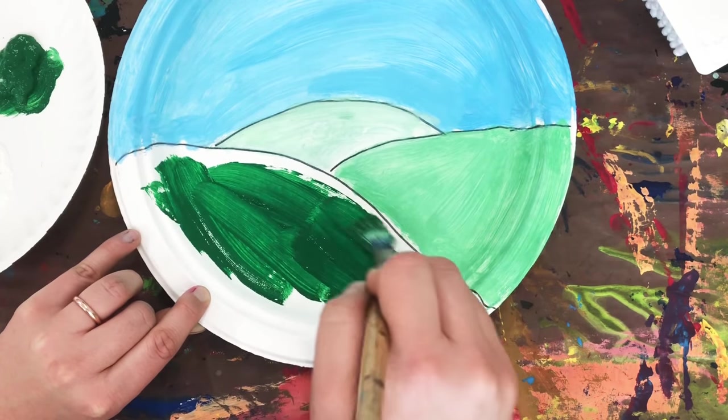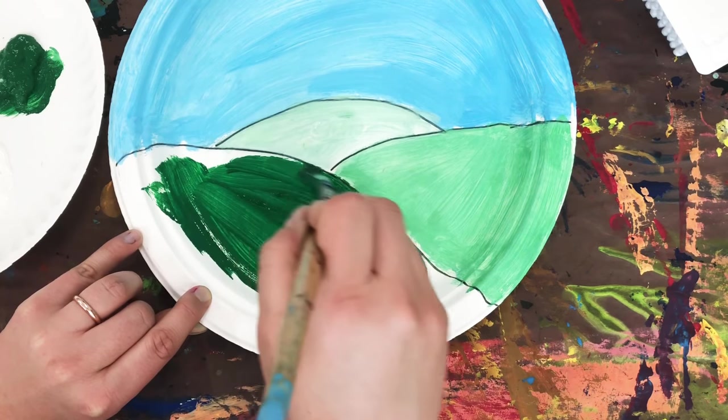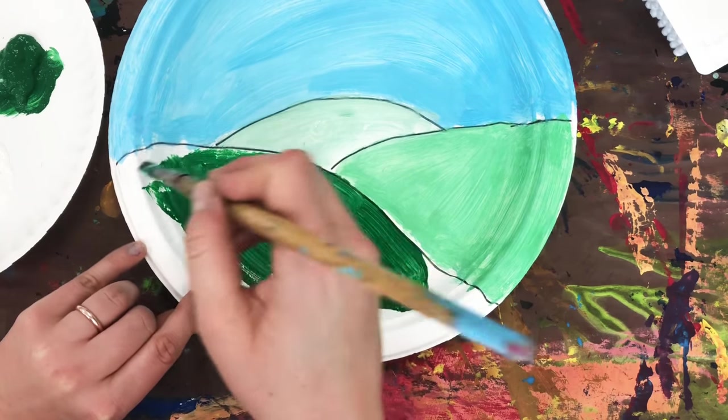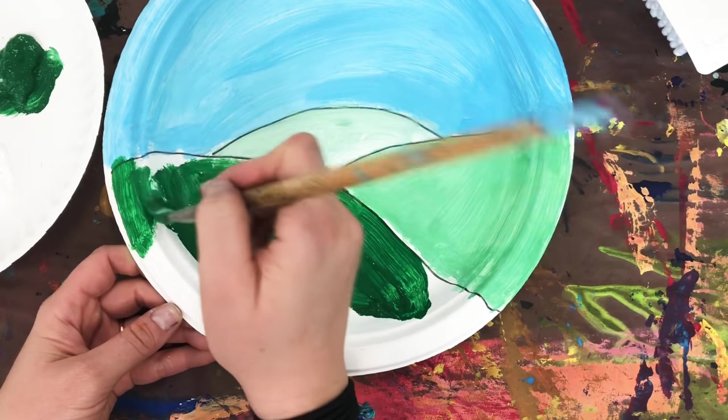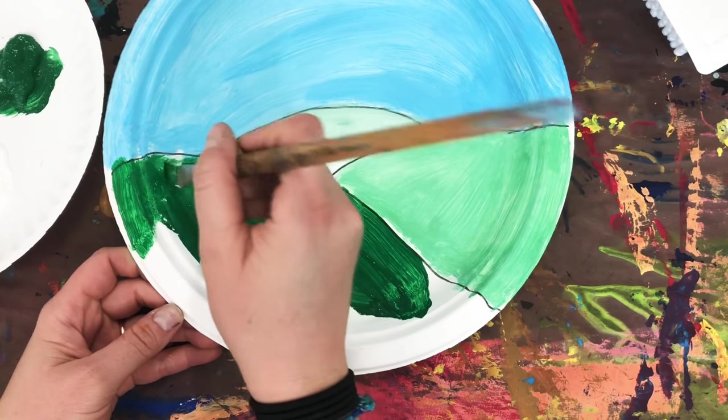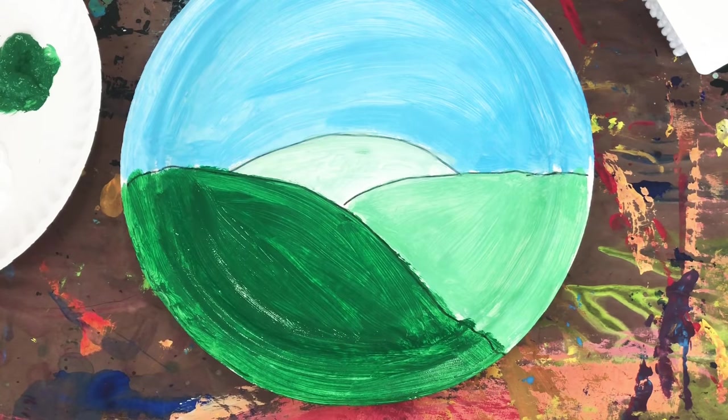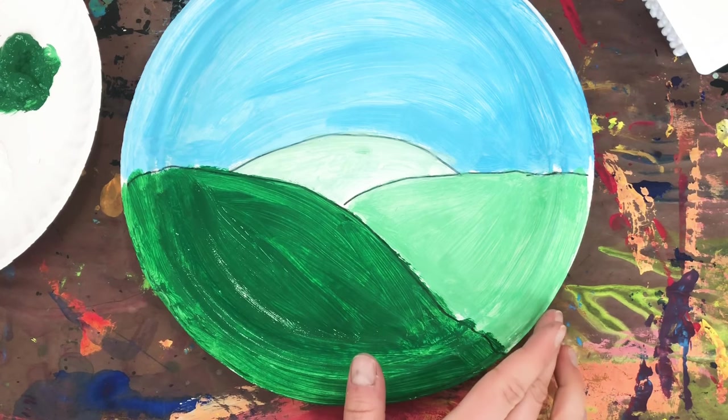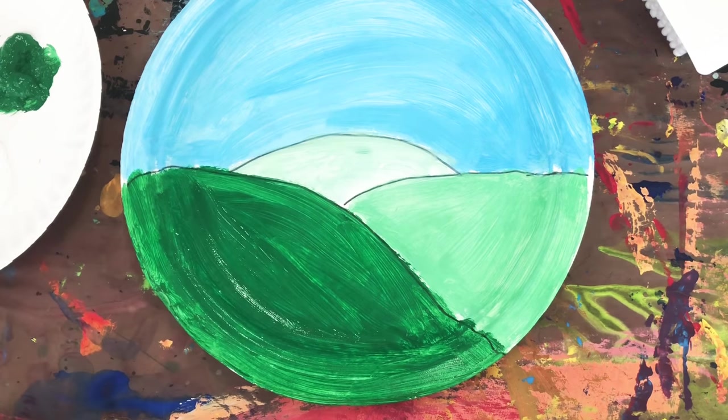So you can see I have these different values: the dark green, the medium green, and the light green. And that's what helps to create my atmospheric perspective. Okay, I've painted my hills. Dark green in the foreground, medium green in the middle ground, and light green in the background.